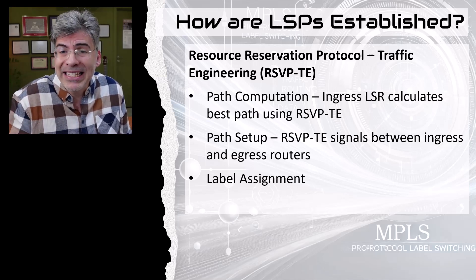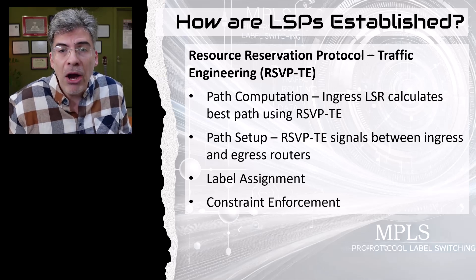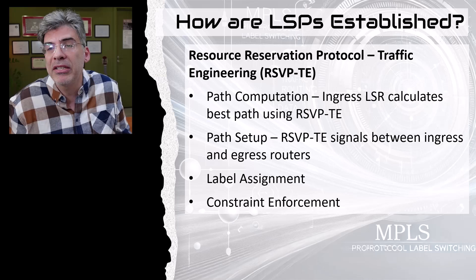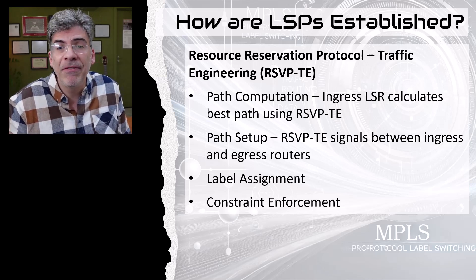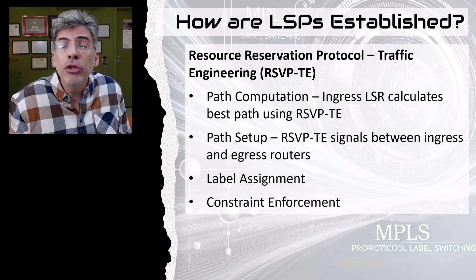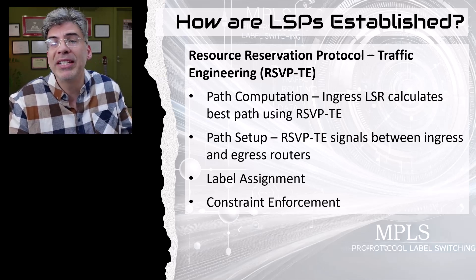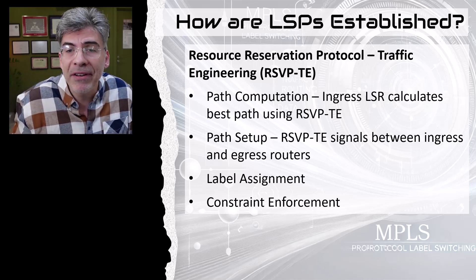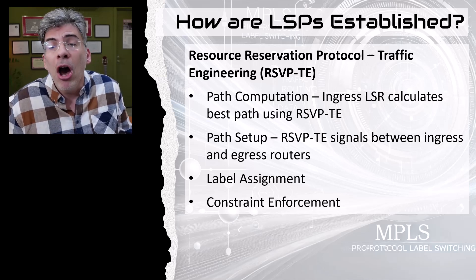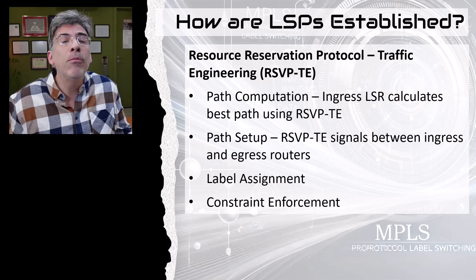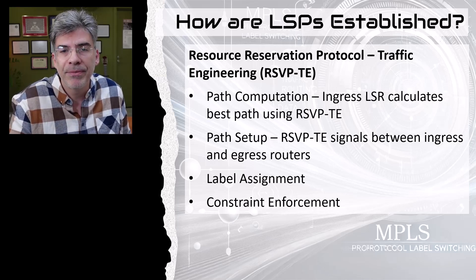In the label assignment step, each router along the path assigns and forwards MPLS labels to establish the LSP, ensuring packets follow the exact route specified during the initial path computation. Finally, RSVP-TE enforces constraints, such as avoiding congested links or reserving the required bandwidth. If the constraints can't be met, the LSP setup fails, prompting the ingress LSR to recalculate a new path. This process makes MPLS TE LSPs highly adaptable and resilient — LSPs can dynamically reroute traffic around failures or congestion, recovering from link or node failures in tens of milliseconds.